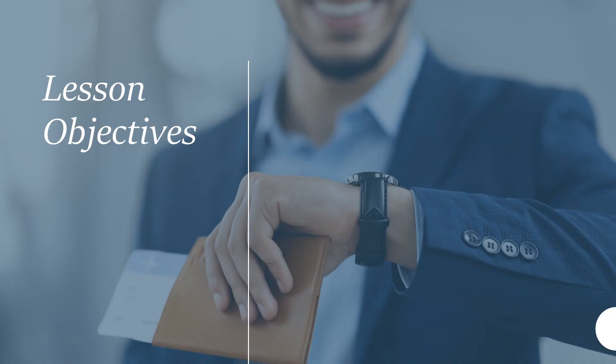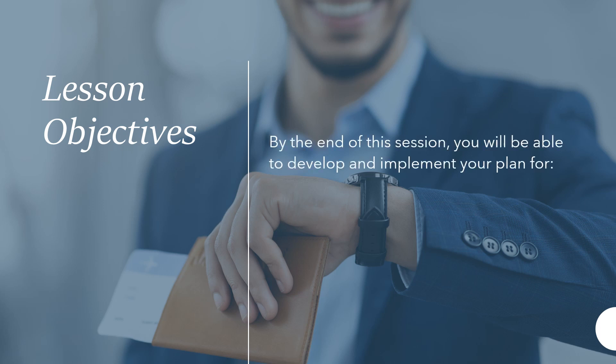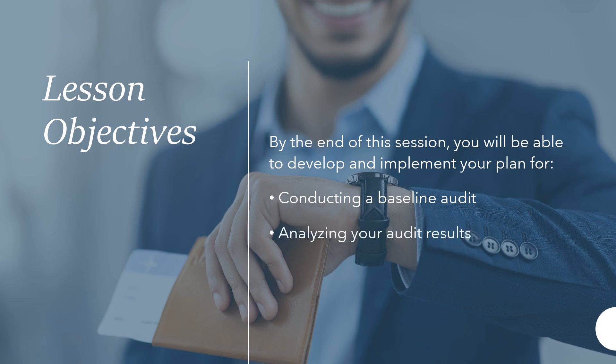We will be using the Sustainability Improvements proposal template that you can download to create your own plan. In this template, there are two parts to this chapter. By the end of this session, you will be able to develop and implement your plan for conducting a baseline audit to determine how sustainable your organization is today, because you have to know where you are in order to know what needs to be improved, and how to analyze the audit data that you collect.